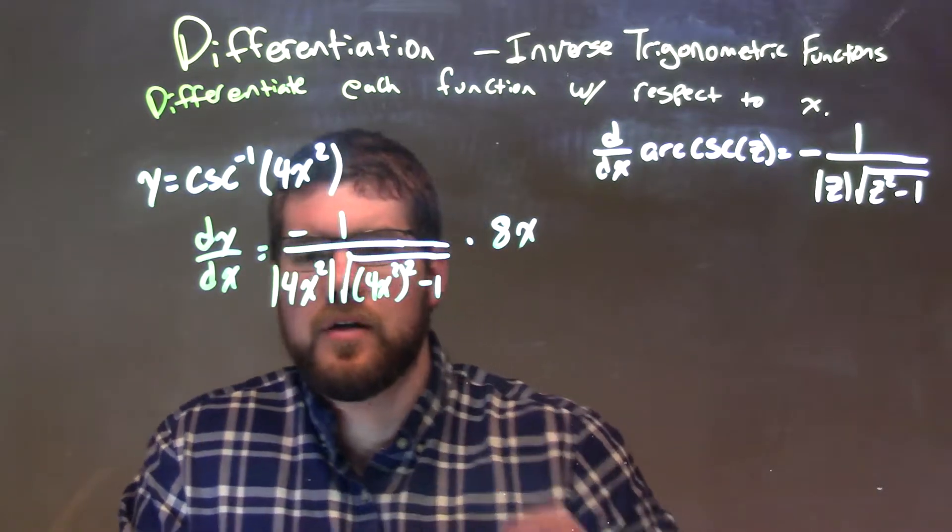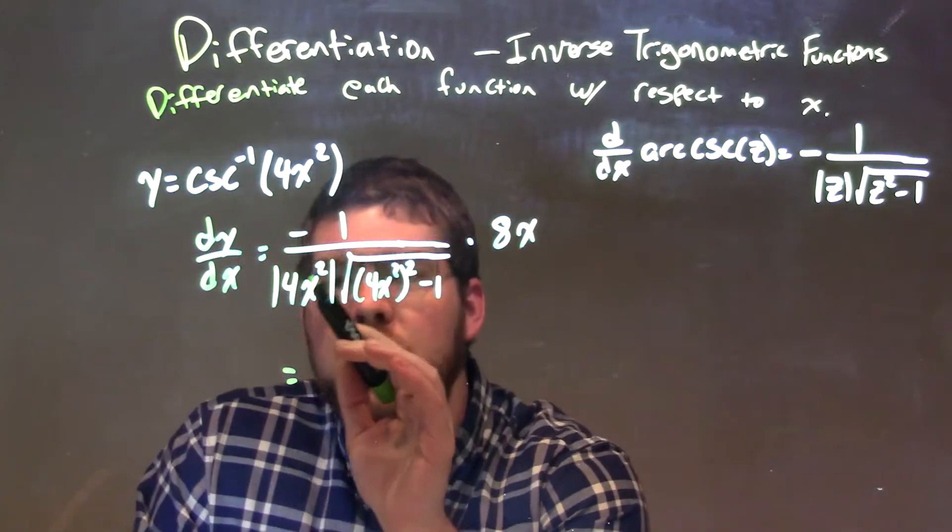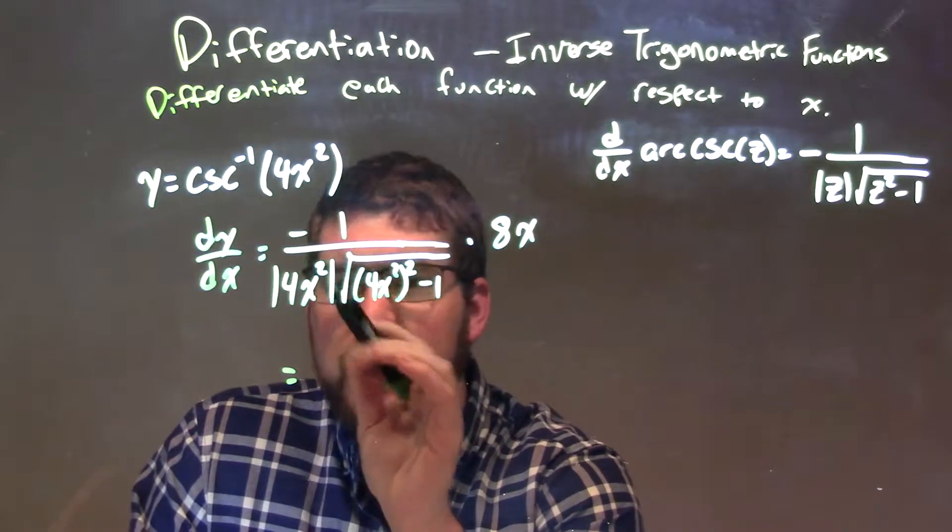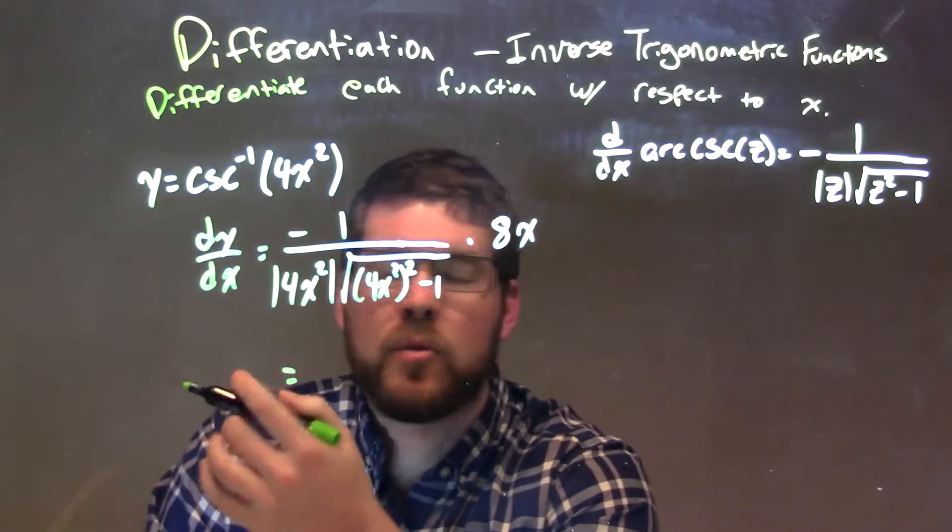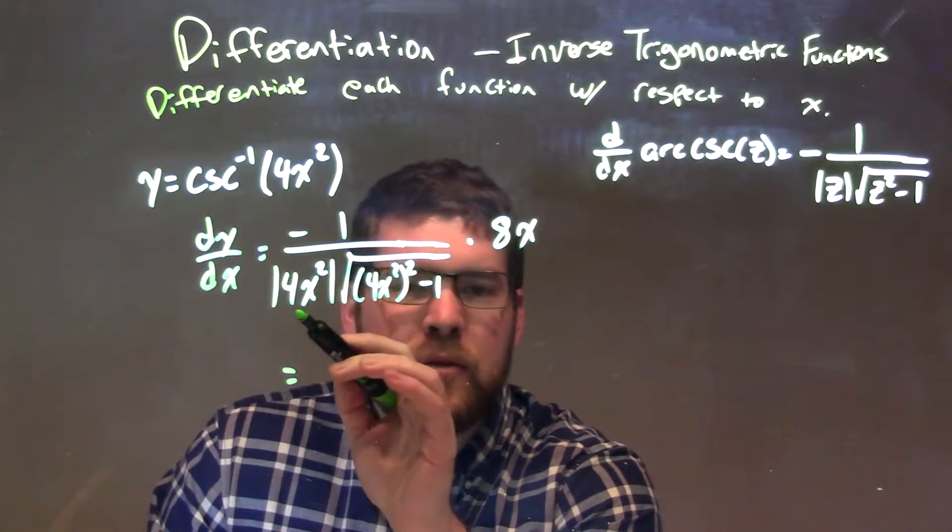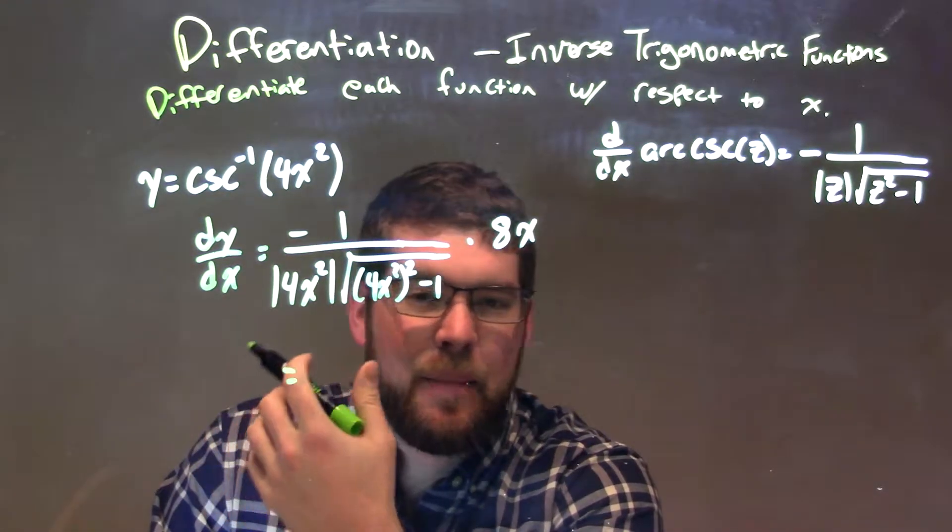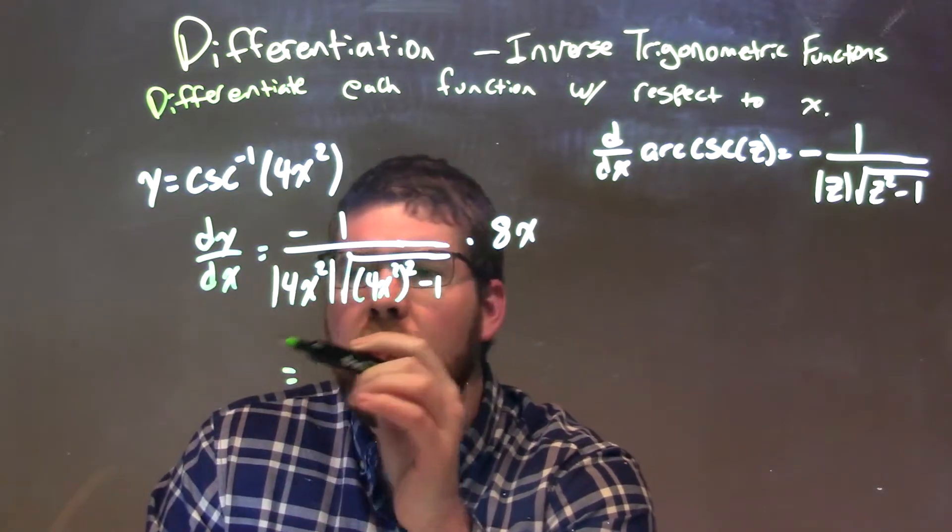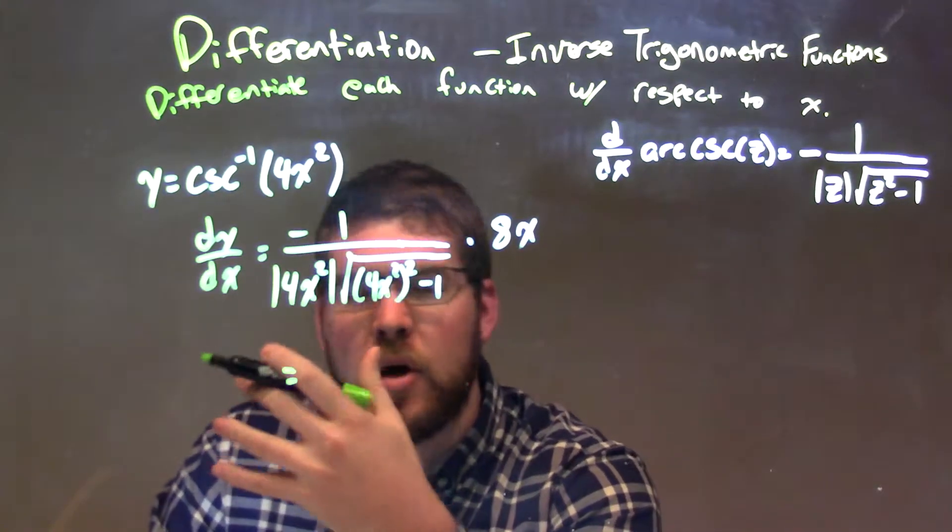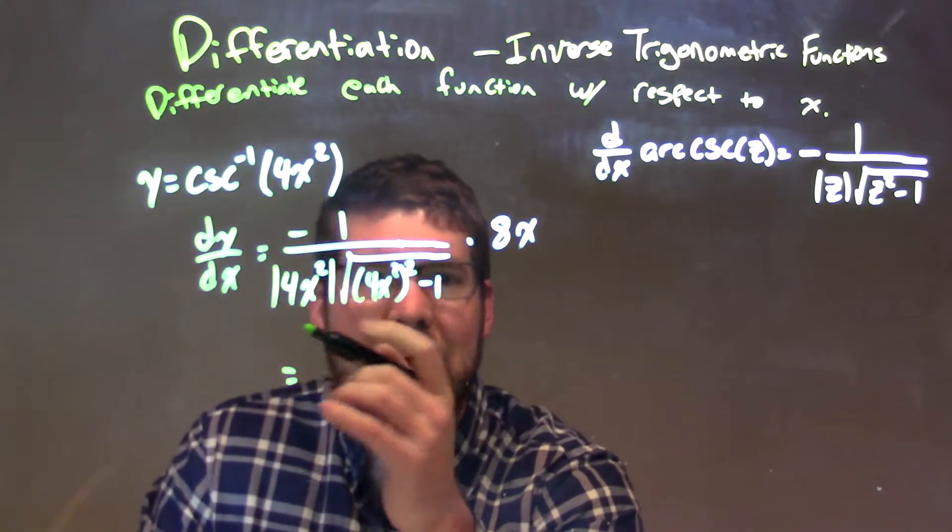So, when we simplify this, it's pretty easy. The negative will stay there, but we look at the 4x squared, and taking the absolute value of 4x squared, well, any number we plug in for x, we're squaring it, so it's going to be a positive number, so the absolute value is unnecessary at this point here.